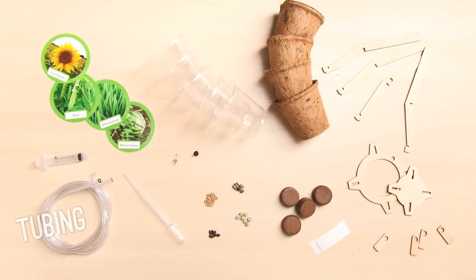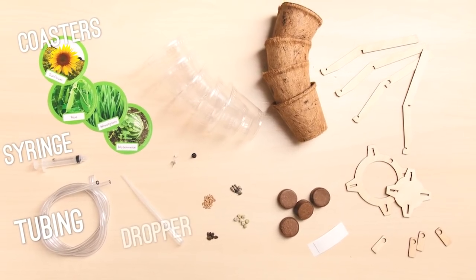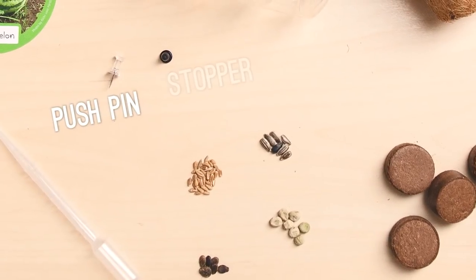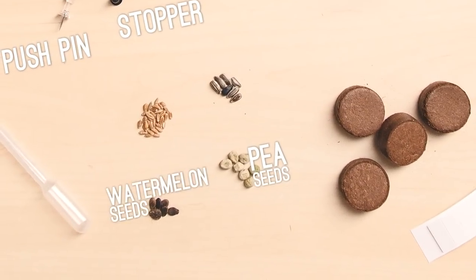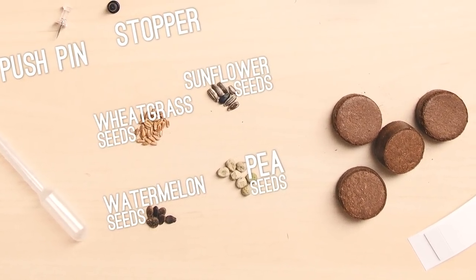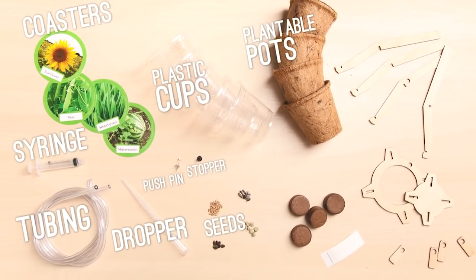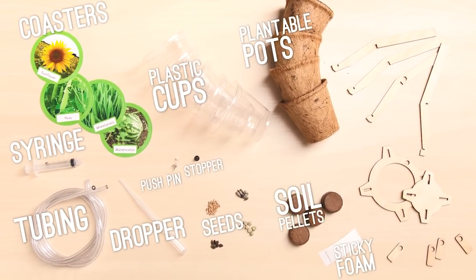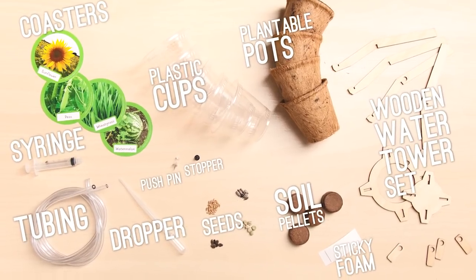Here's what you get with your kit. Some plastic tubing, a syringe, some coasters, a dropper, a pushpin and stopper, some pea, watermelon, sunflower, and wheatgrass seeds, biodegradable plastic cups, plantable pots, some sticky foam, some soil pellets, and a wooden water tower set.